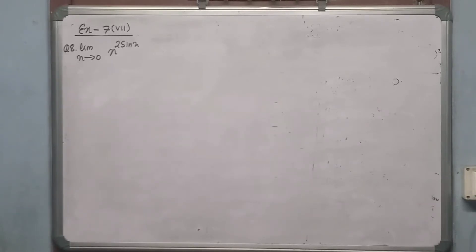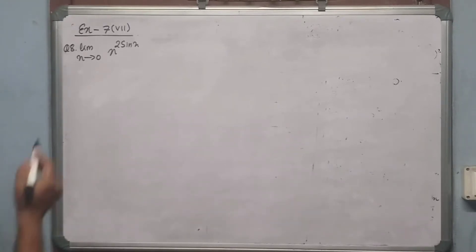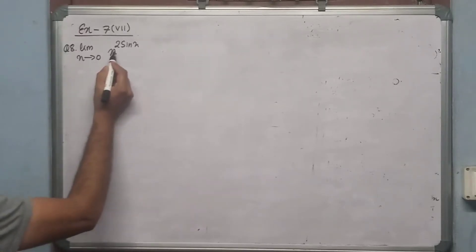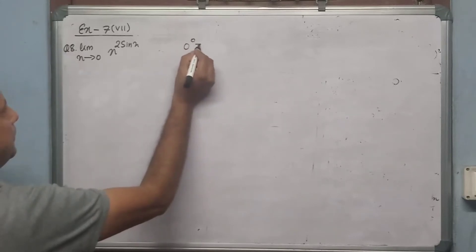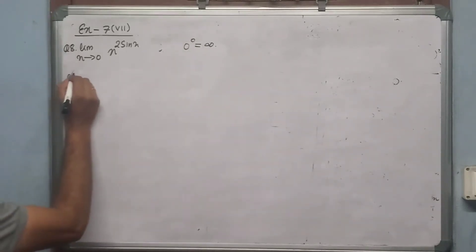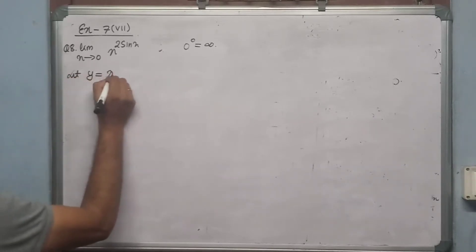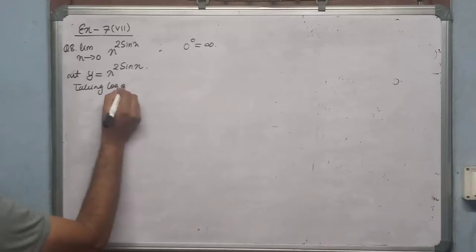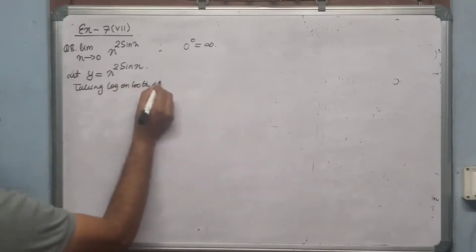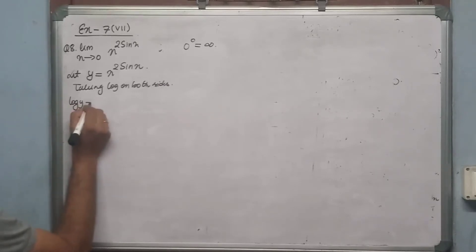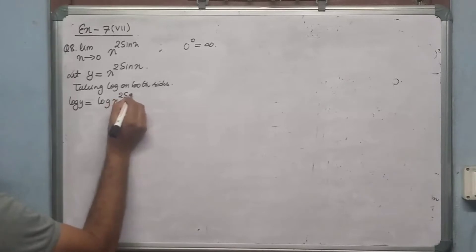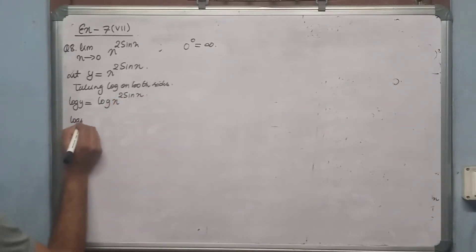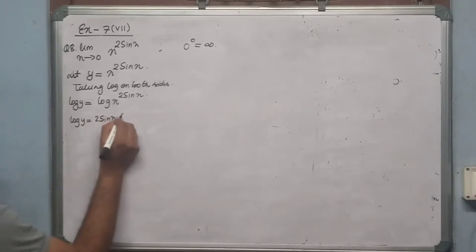The next question is similar but involves x to the power of a trigonometric function: limit x tends to 0 of x^(2sin x). Since sin 0 = 0 and x = 0, this is again 0 to the power 0 — undefined. Since it is variable to the power variable, we let y = x^(2sin x), then take log on both sides: log y = 2sin x·log x.